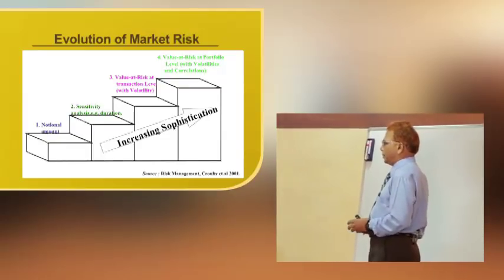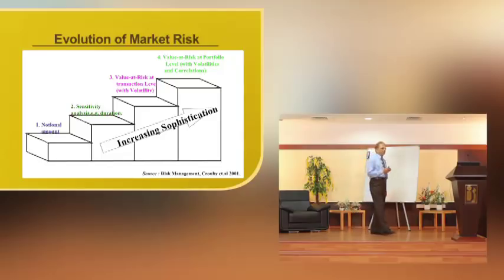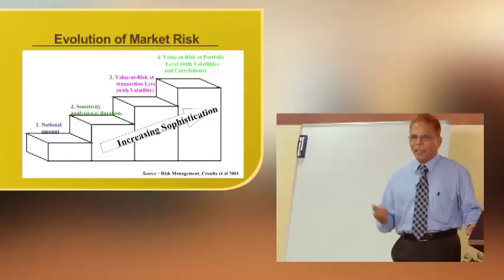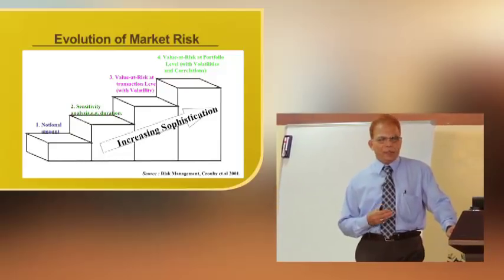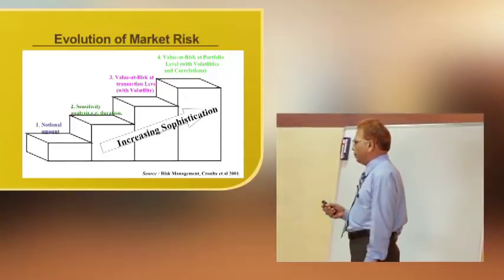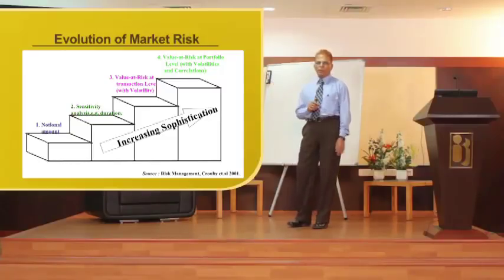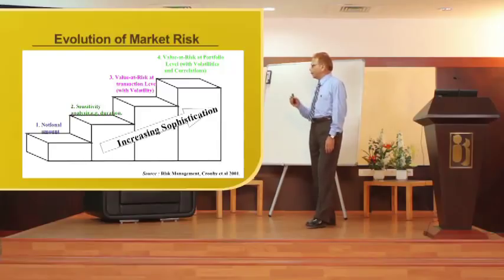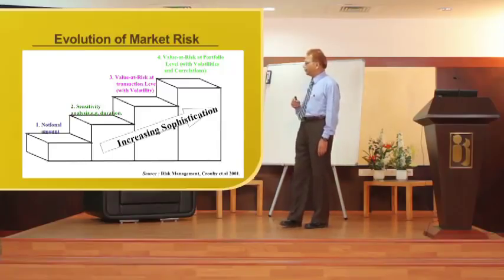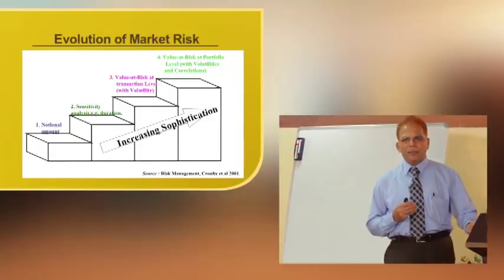The evolution of market risk measurement has taken place with increasing sophistication. It starts very basically with the notional amount — say if you are holding a particular position, the maximum loss incurred is the notional amount. Then sensitivity analysis, which considers only sensitivity via duration, was used to measure market risk.